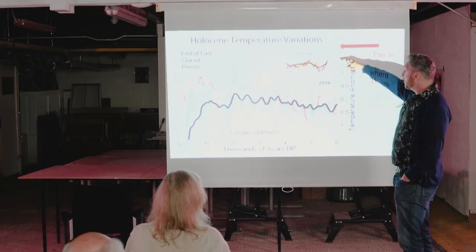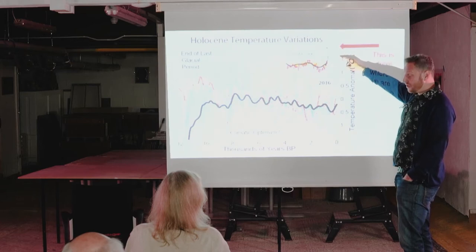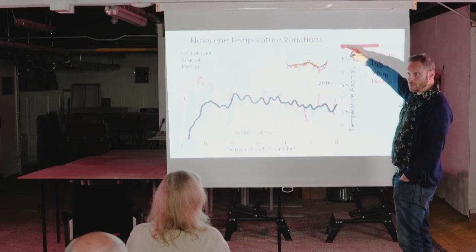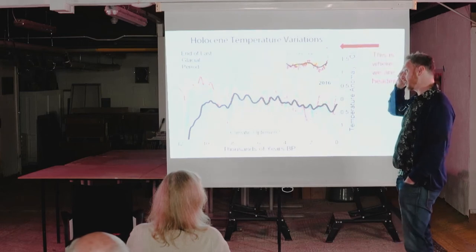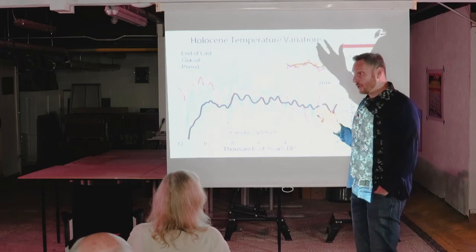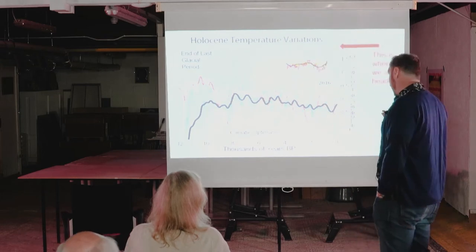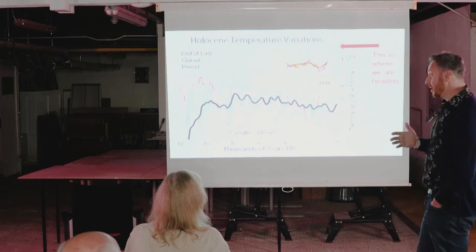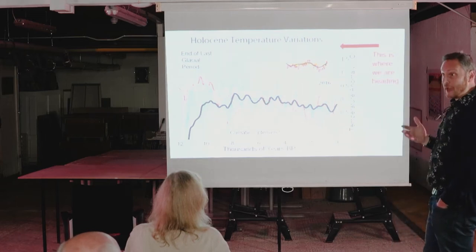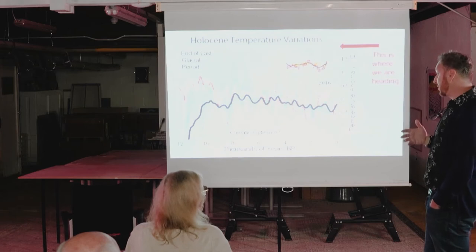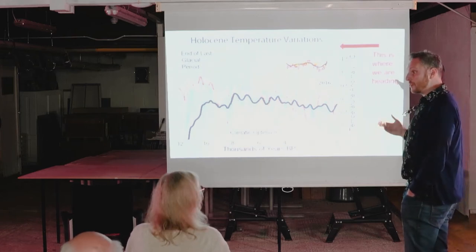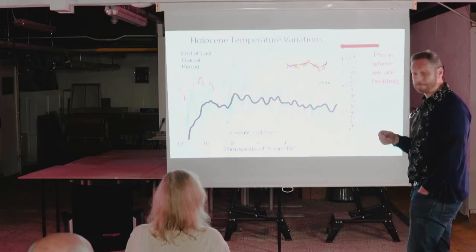This is where the Paris Accord would like us not to exceed — one and a half degrees. Unfortunately, this is where we're probably going. So with these two charts, we can see that this has happened very recently, it's way outside of the bounds of all the variability we've had before, and it's man-made. That's the sticking point — it's all because of what we've been doing for the last 150 years.